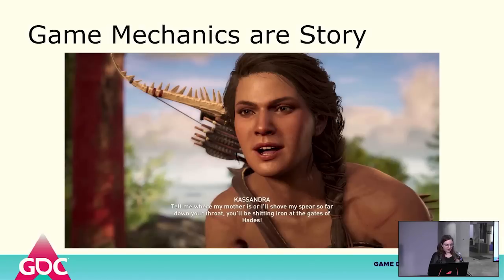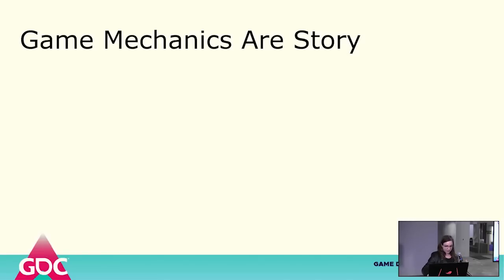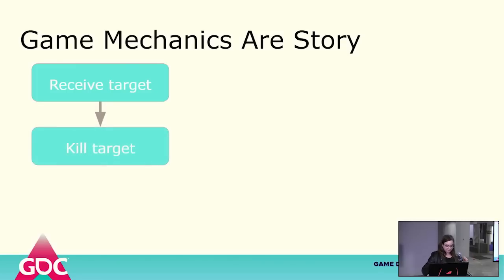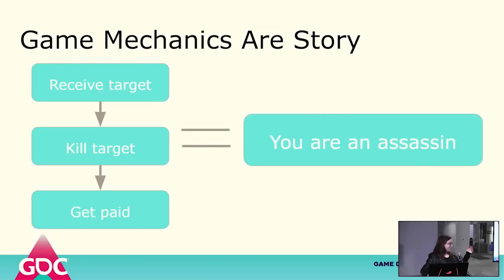The first one is easier to talk about. Let's talk about Assassin's Creed. Assassin's Creed is a game about stealthily assassinating targets, and the story being told is one of an assassin — that makes a lot of sense. Here are the actions: you talk to a person who needs somebody killed, you kill the target, then you're rewarded for doing so with money. This sets up an immediate story that we can understand: you are an assassin. Even if we never told you Cassandra was an assassin, the gameplay tells you she is.